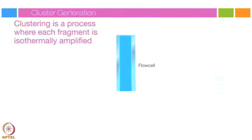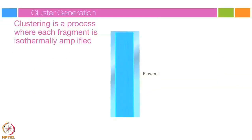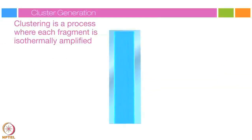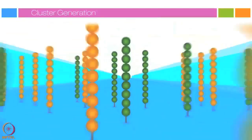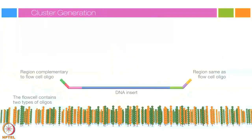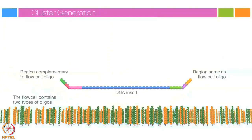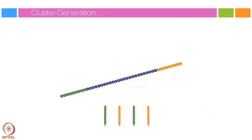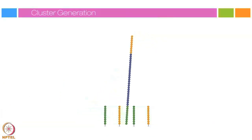Clustering is a process wherein each fragment molecule is isothermally amplified. The flow cell is a glass slide with lanes, and each lane is a channel coated with a lawn composed of two types of oligos. Hybridization is enabled by the first of the two types of oligos on the surface, which is complementary to the adapter region on one of the fragment strands.